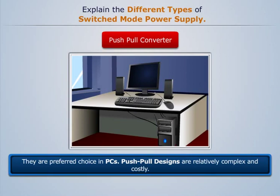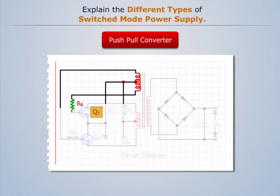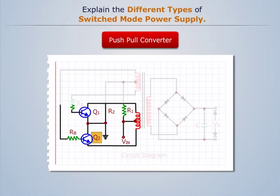The circuit diagram of push-pull converter is given as when Q1 is in saturation, energy is stored in the upper half of primary winding. When Q2 is on, energy is stored in the lower half of the primary winding. The voltage across the secondary is then rectified and filtered to get DC output.